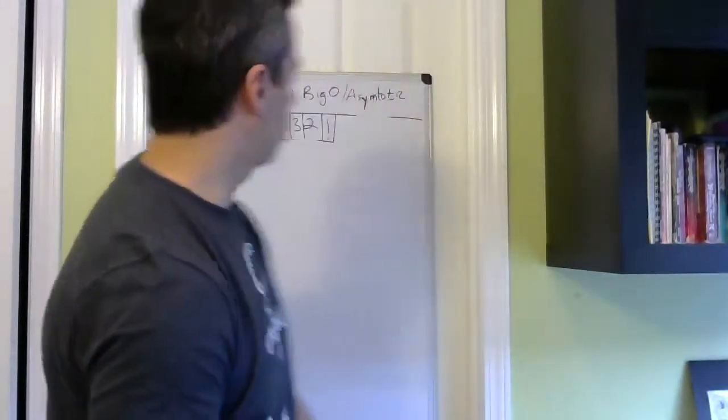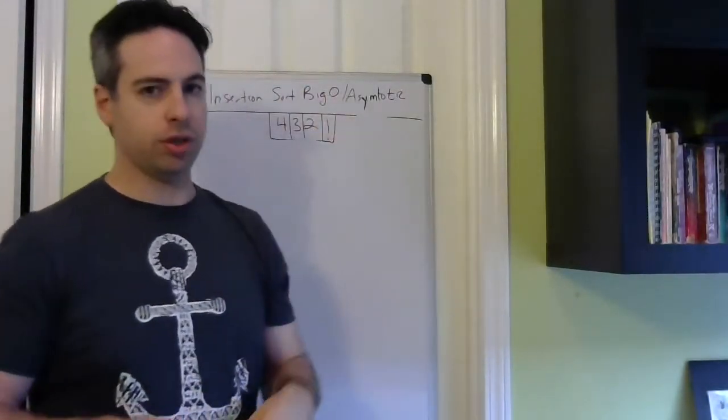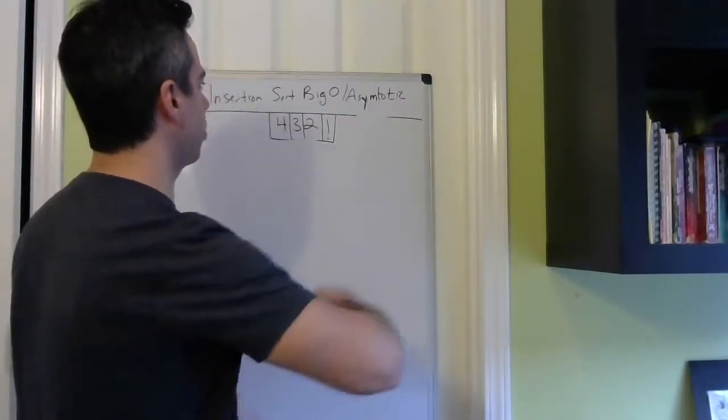Yeah, insertion sort runtime complexity. Let's talk about it. So it's also known as big O notation, and big O is asymptotic notation. You can get me on that, but let's just call it asymptotic notation.